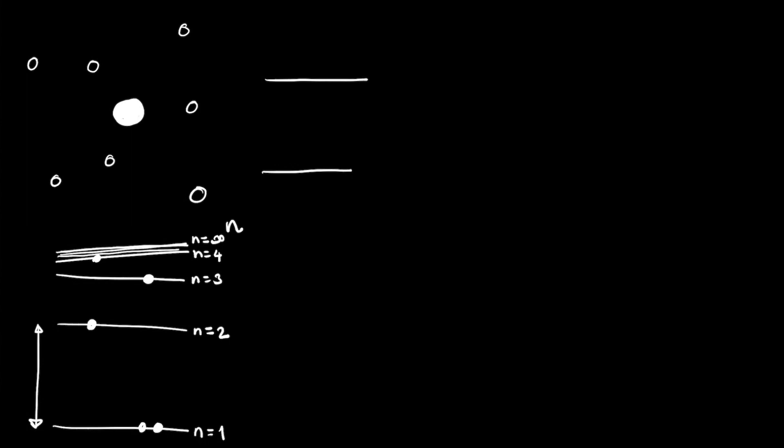These electrons can change from one level to another level. And the key thing is when they do that, so say we've got an electron right here, he's going to move from the n equals 2 level down to the n equals 1 level. When he does that, he emits a photon. He loses energy, and he loses the energy in the form of a photon.